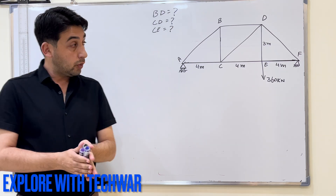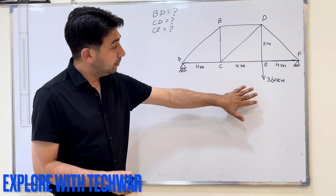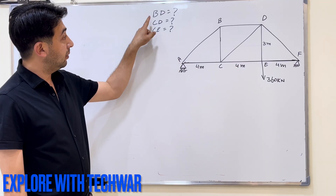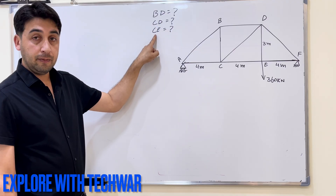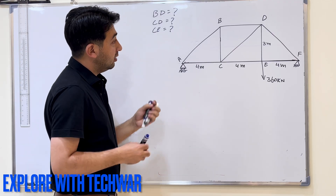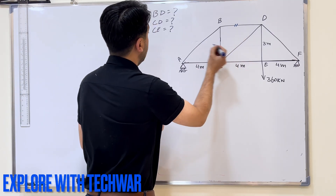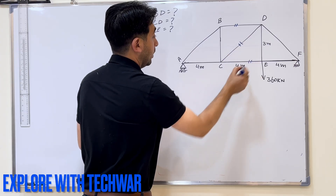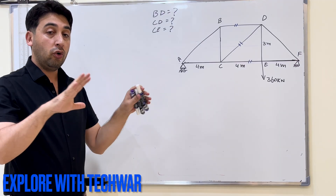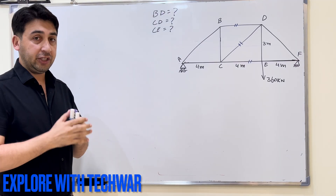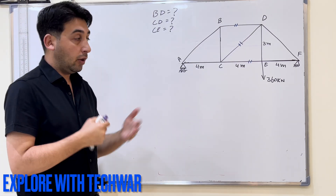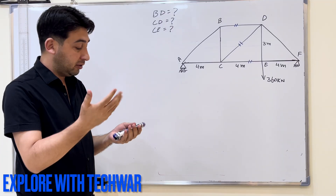Hello everyone, hope everyone is doing well. We have another problem here — we have this truss and the question is to find internal forces in members BD, CD, and CE. We have already labeled the truss and it has been asked to find these three members only. It is not required to solve the whole truss, so we will use the method of sections here.